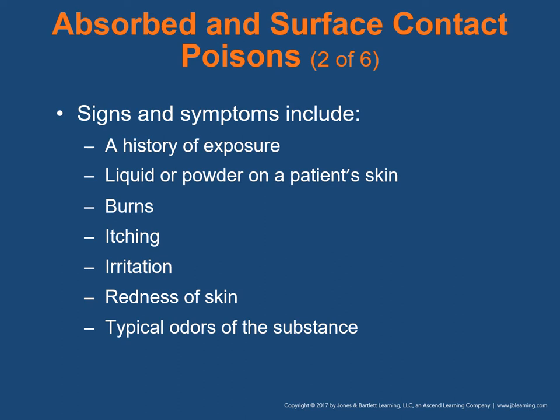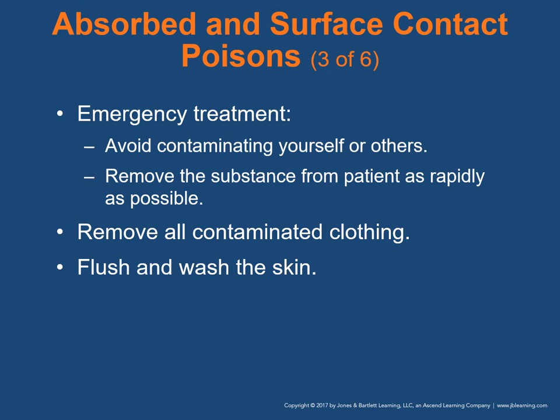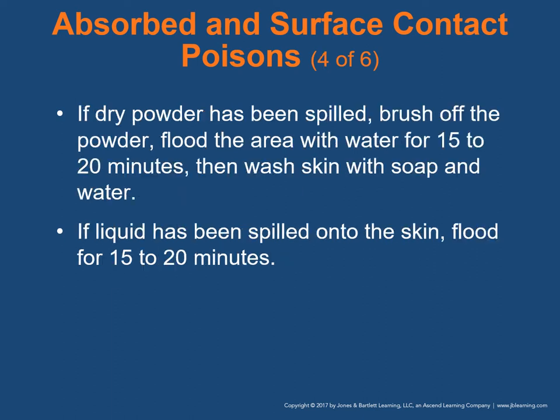For emergency treatment of absorbed poisons: avoid contaminating yourself or others. Remove the substance from the patient as rapidly as possible — remove all contaminated clothing and flush and wash the skin. Be careful not to leave the patient lying on contaminated clothing — cut clothing off the front but make sure they're not still lying on it. If a dry powder has been spilled, brush off the powder first, then flood the area with water for 15-20 minutes, then wash with soap and water. If a liquid has been spilled onto the skin, flood for 15-20 minutes.